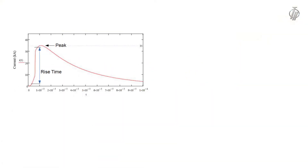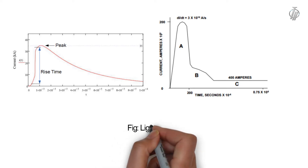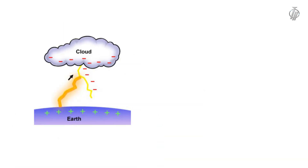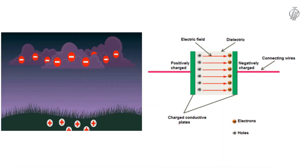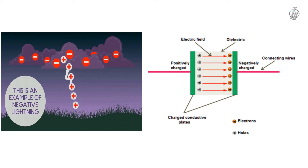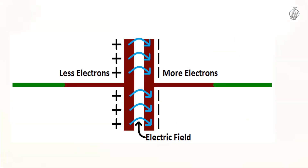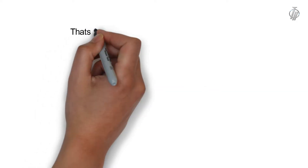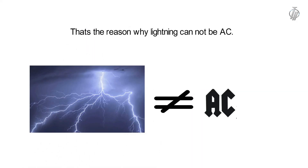Now if we look at the waveform of lightning, we can see that the lightning waveform is different from the AC waveform. Because lightning is a capacitive discharge. In lightning, current flows from the earth's positive charge toward the negative charge, like a capacitor. The charge in lightning flows in one direction, like DC power. So for this reason, lightning is not AC power.